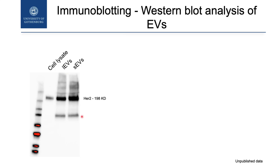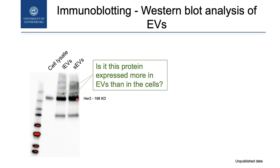This is a typical western blot. This is just an example where we loaded the cell lysate and two types of extracellular vesicles, large and small. We investigated HER2. What is important is that most of you will tell me that we really have an enrichment of HER2 in the vesicles. But the thing is, we cannot say that this protein is really more present in the vesicles than in the cells, because we don't have anything to compare with. This doesn't happen in the vesicles.